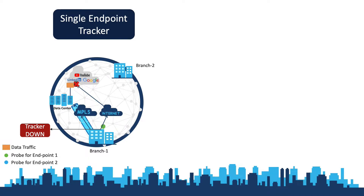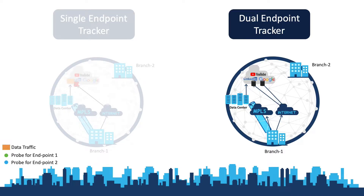Due to this false negative, the tracker will go down, which eventually results in not utilizing that DIA circuit to route the internet traffic anymore, even though the path to reach the internet could be healthy. In order to overcome this, the dual endpoint tracker feature has been introduced, which tracks not one but two endpoints under individual trackers, which are then mapped to a tracker group. This ensures the router takes a more robust decision depending on the results of these two endpoints, subjected to either a boolean AND or a boolean OR operation, thus reducing chances of false negatives.